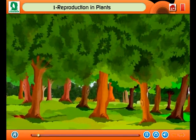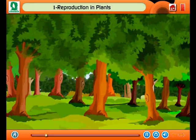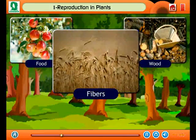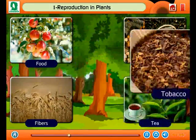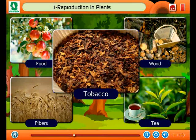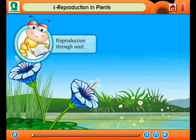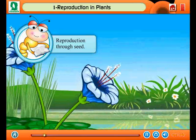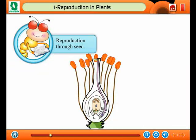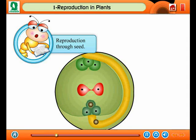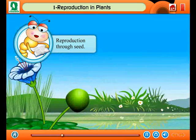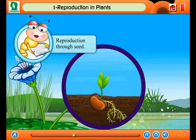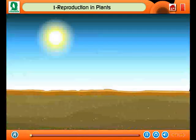Reproduction in plants. You have studied in earlier classes that plants provide us food, wood, fibers, tea, tobacco, and many other things. Most plants grow from seeds. When a plant attains a certain age, flowers on the plant start coming. Then the process of pollination and fertilization takes place. The flower blossoms and fruits come out on the plant. The fruit contains seeds which can further produce new plants by sowing.